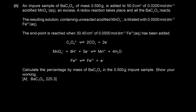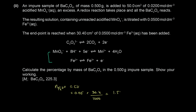First, find the moles of Fe2+: n = 0.05 × (30.4/1000) = 1.52 × 10⁻³ mol. This Fe2+ reacted with the excess MnO4⁻. From the half-equations, 5 mol Fe2+ reacts with 1 mol MnO4⁻, so the excess moles of MnO4⁻ = 1.52 × 10⁻³ ÷ 5 = 3.04 × 10⁻⁴ mol.